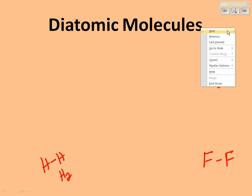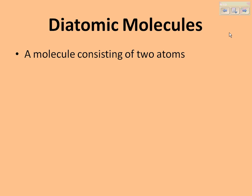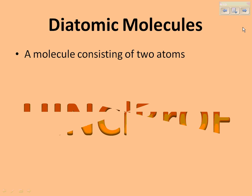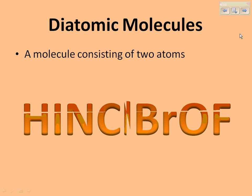Diatomic molecules are molecules that consist of two atoms. You've seen the Hinkle chart on the wall in the classroom — all of those elements exist as diatomic molecules. When you write hydrogen, it's H2; it's bonded with itself. Pure bromine is Br2. They do not exist as monatomic atoms; they're always bonded to themselves. They're molecules.